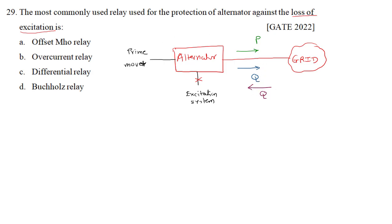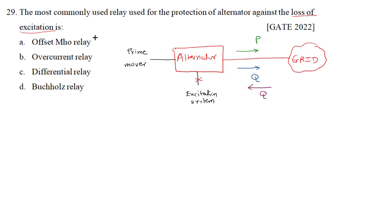As the prime mover input is intact, the alternator will still supply active power. So whenever there is a loss of excitation, the alternator supplies active power but takes reactive power from the grid. During this condition, its impedance changes, and we use the offset mho relay to detect this condition and provide protection against loss of excitation.